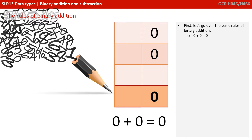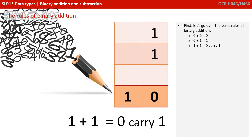The rules are quite simple. A 0 and a 0 in binary equals 0. A 0 and a 1 equals 1. A 1 and a 1 can't equal 2 because we don't have a 2 in binary, so a 1 and a 1 equals 0, and then we carry a 1 to the next column, because 10 in binary is the denary number 2.